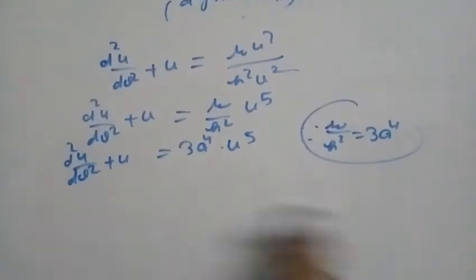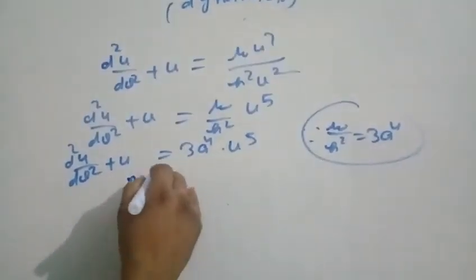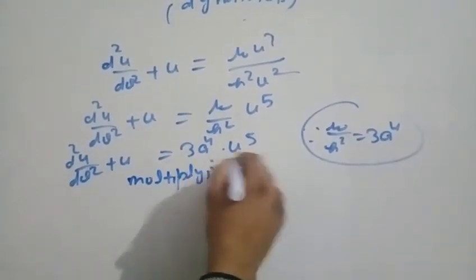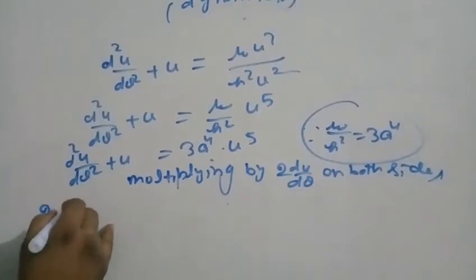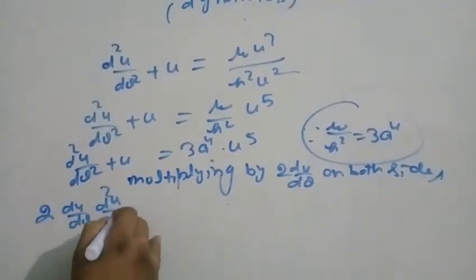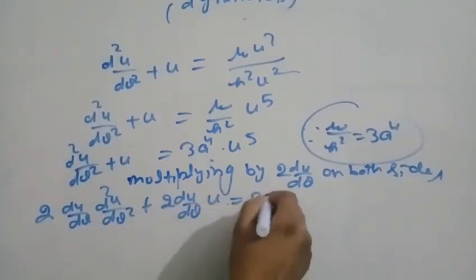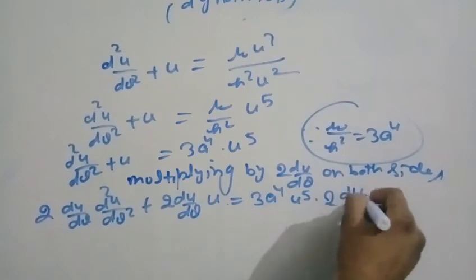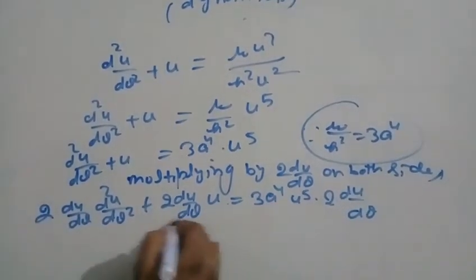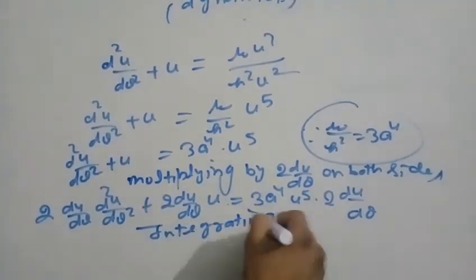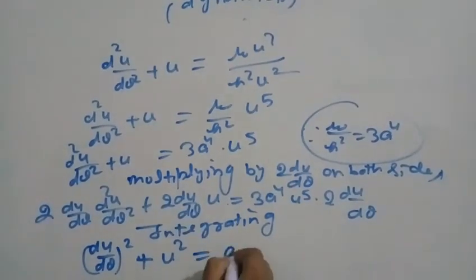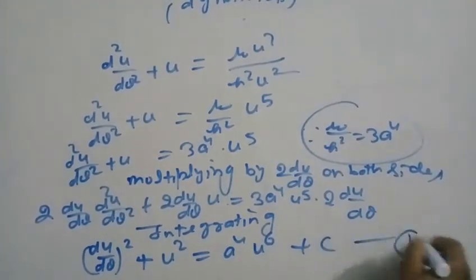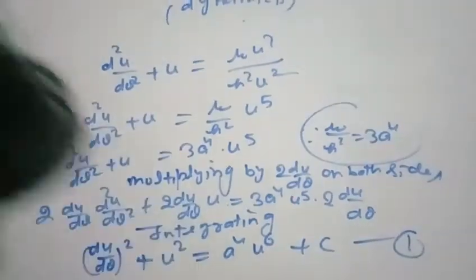Multiplying through by 2(du/dθ): 2(du/dθ)(d²u/dθ²) + 2u(du/dθ) = 3a⁴·u⁵·2(du/dθ) = 6a⁴·u⁵·(du/dθ). Integrating both sides: (du/dθ)² + u² = 3a⁴·u⁶/3 + C = a⁴u⁶ + C.